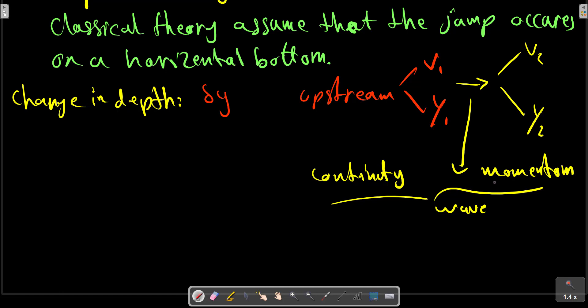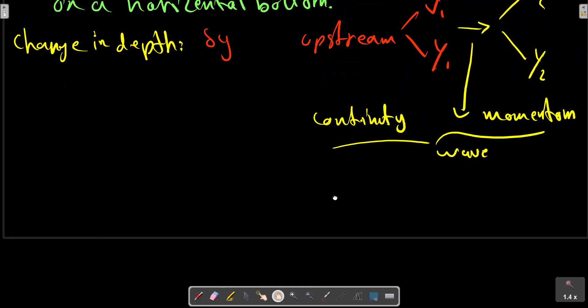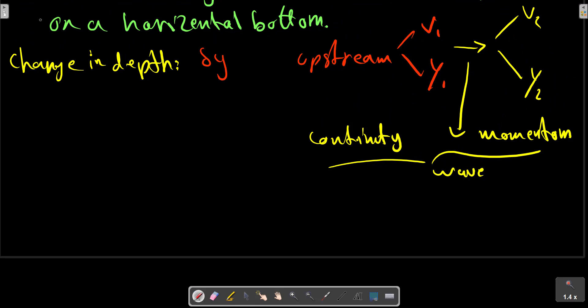For the upstream and downstream conditions, we can obtain this relation: a plus t at point 1 squared is equal to a plus 1, which equals y2 over y1.